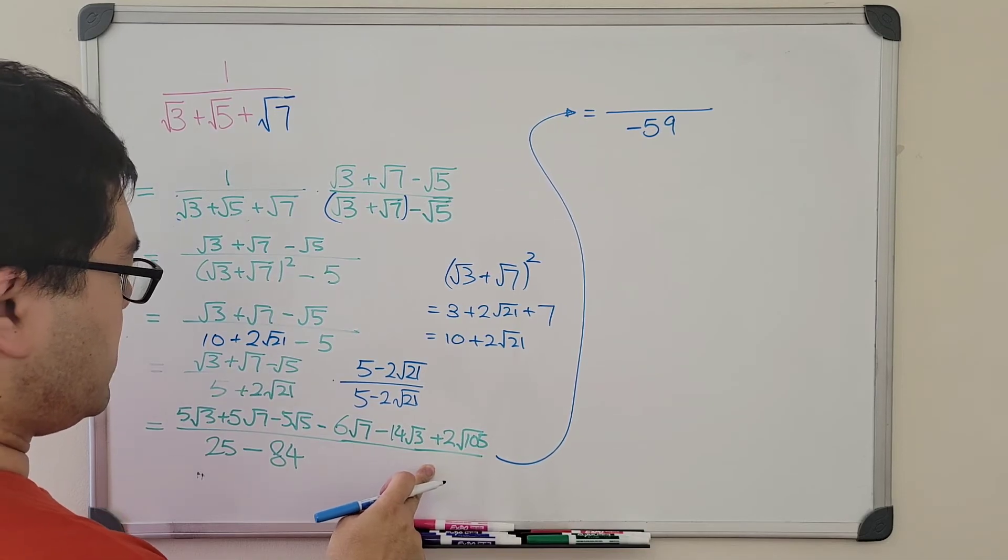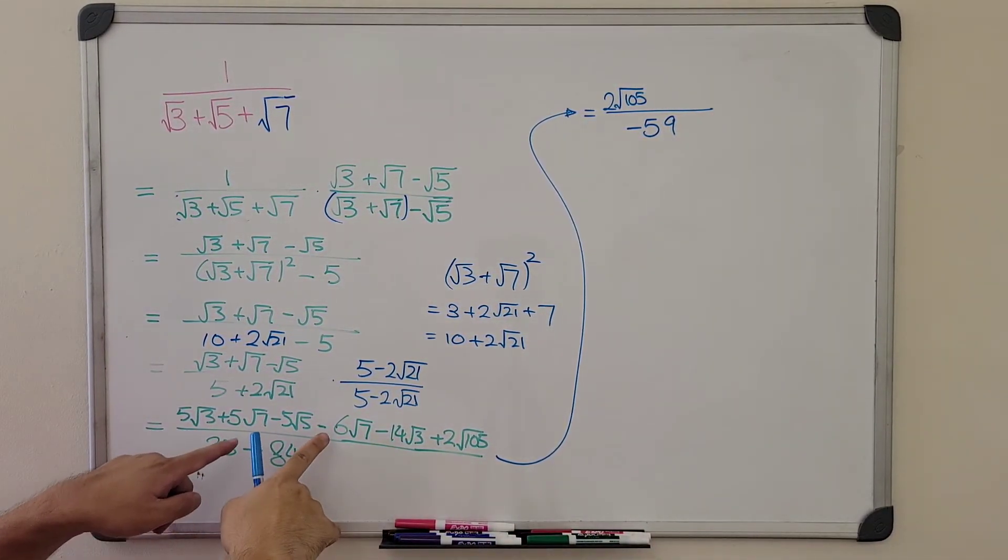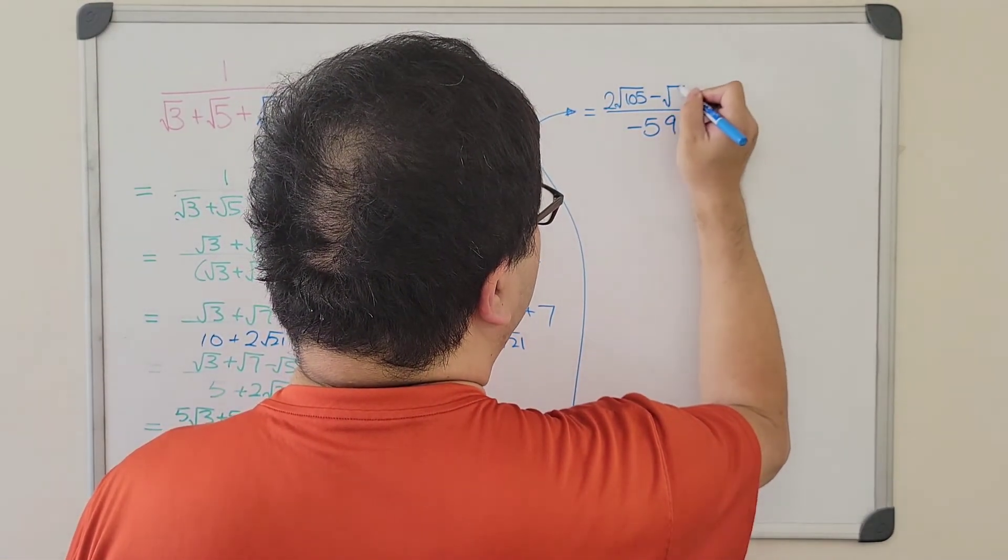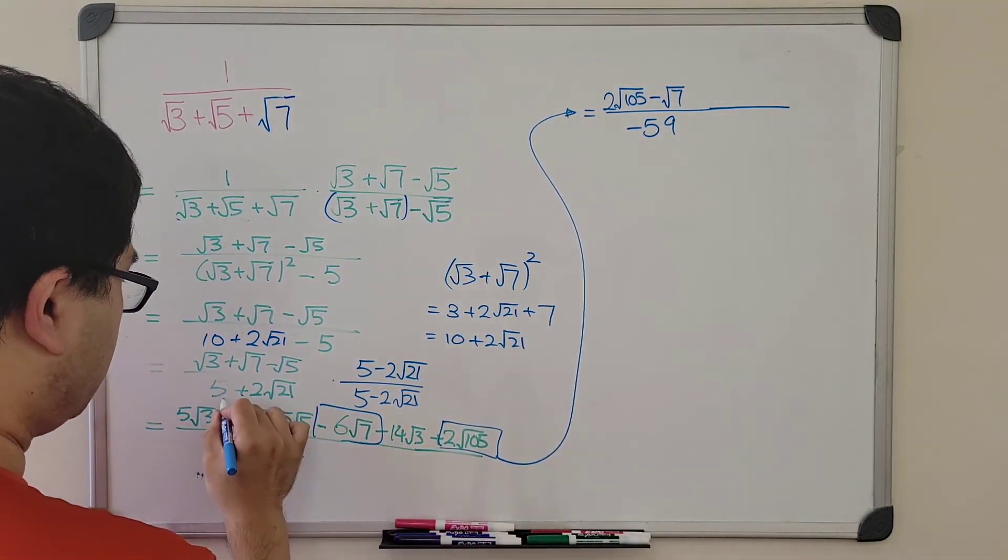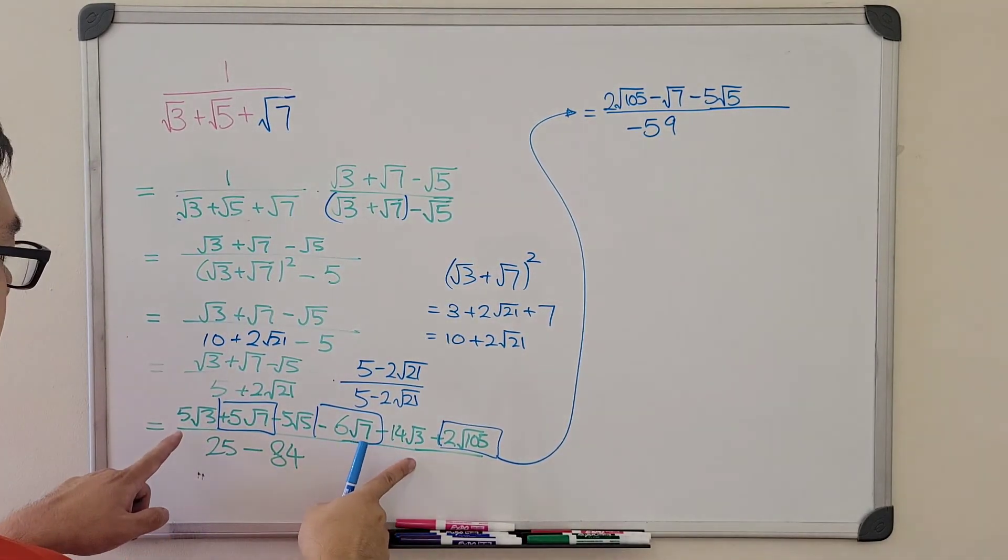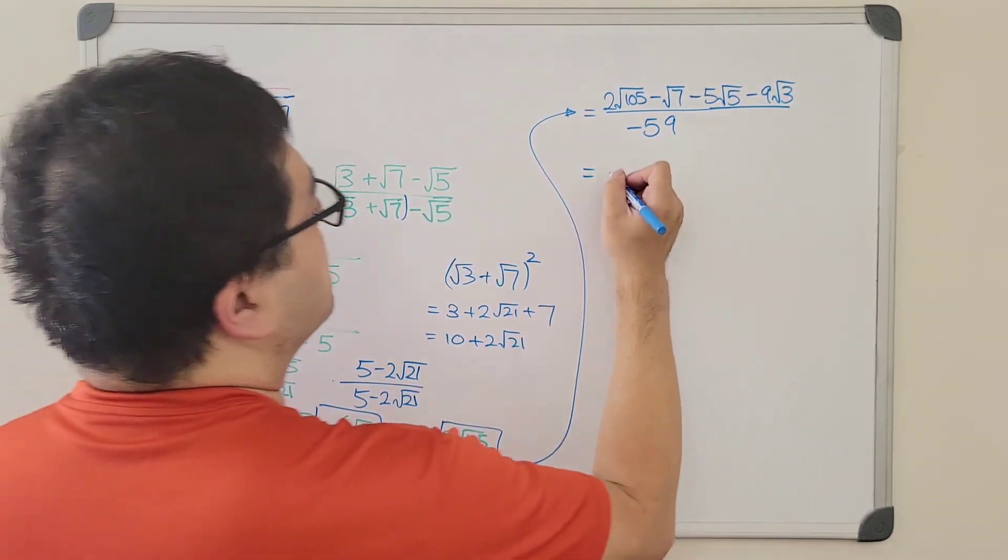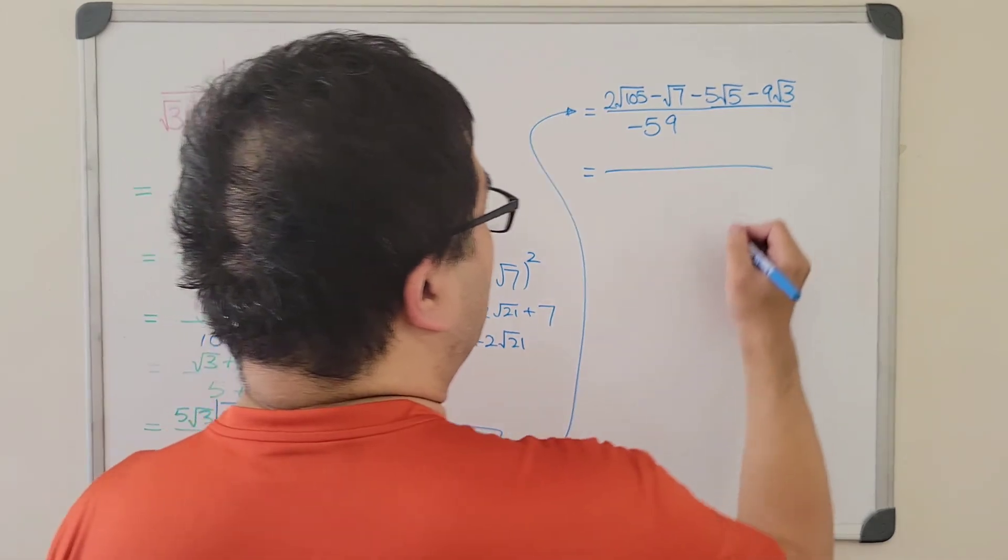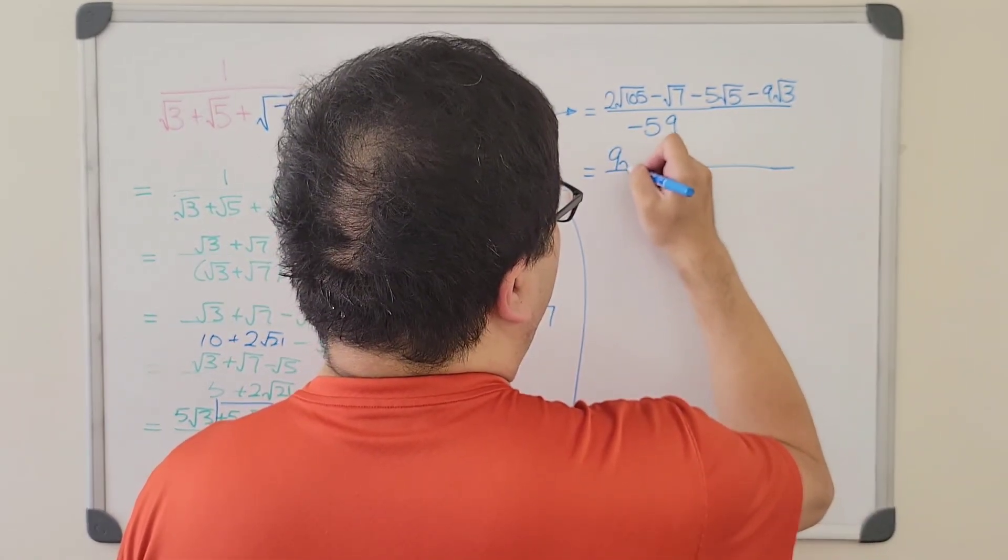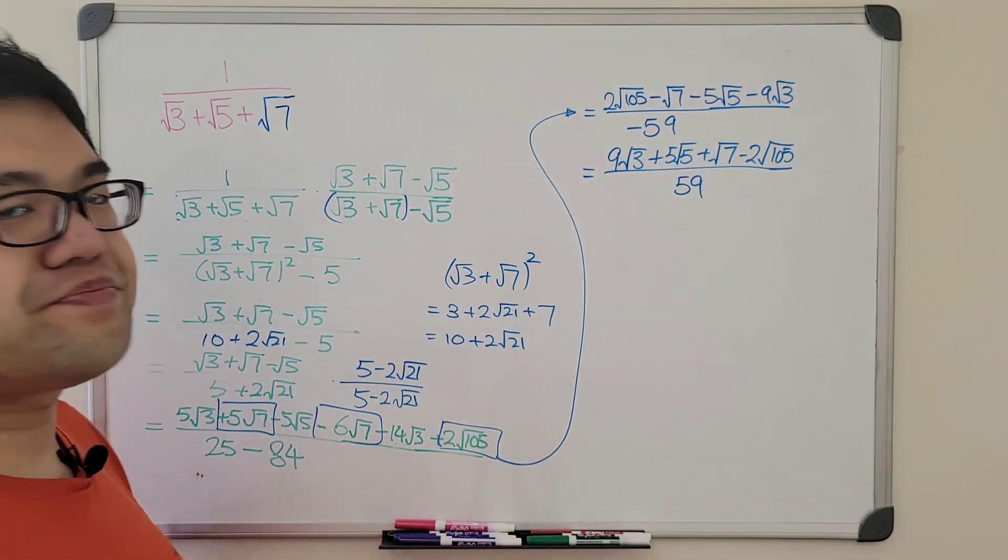And then let's see what we can simplify. Well, the radical 105 is already up there. There's only this term here. We cannot do much. So we already did this. Next, radical 7, we have minus 6 plus 5, which is negative 1. Then we also have radical 5 here. And finally, we have 5 minus 14, which is negative 9 radical 3. And don't forget, we never want to keep the negative in the denominator because we want it to be unique by having the denominator positive. So, pull it out and then multiply on top. We just change all the signs. Yeah, that's it.